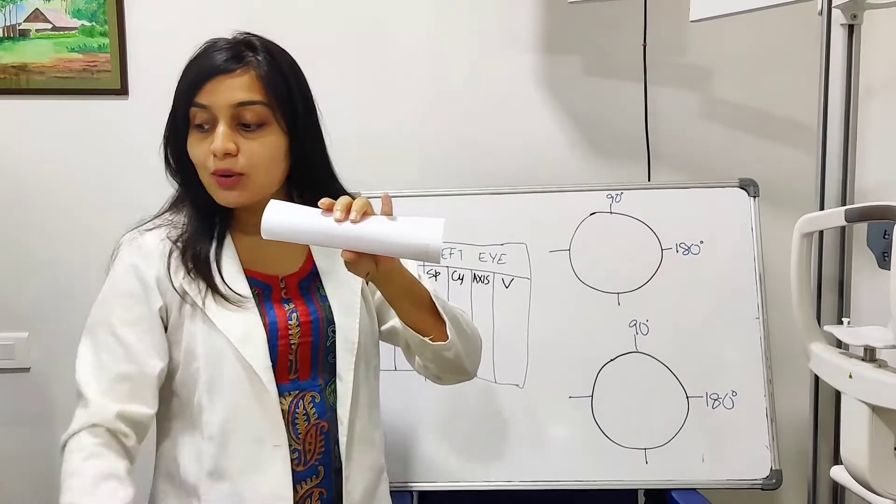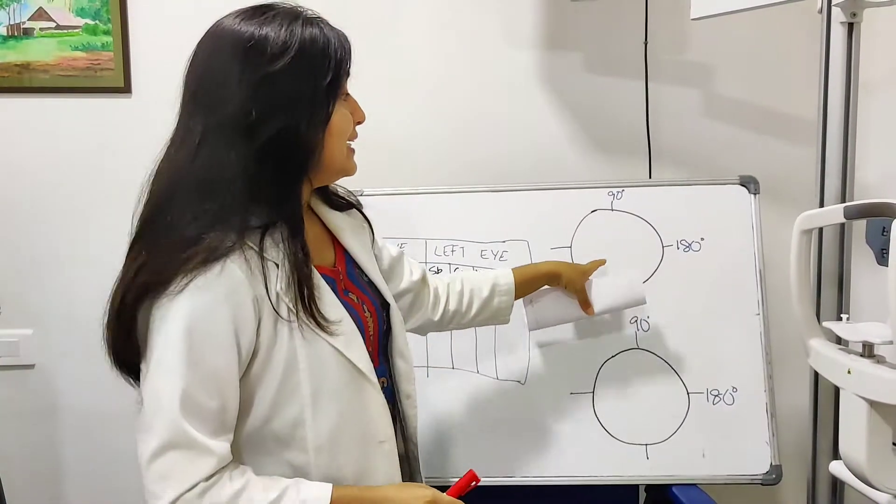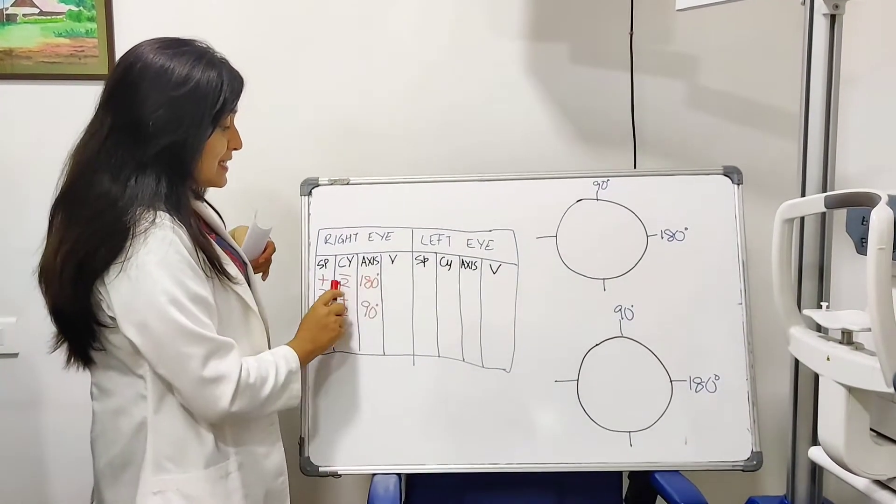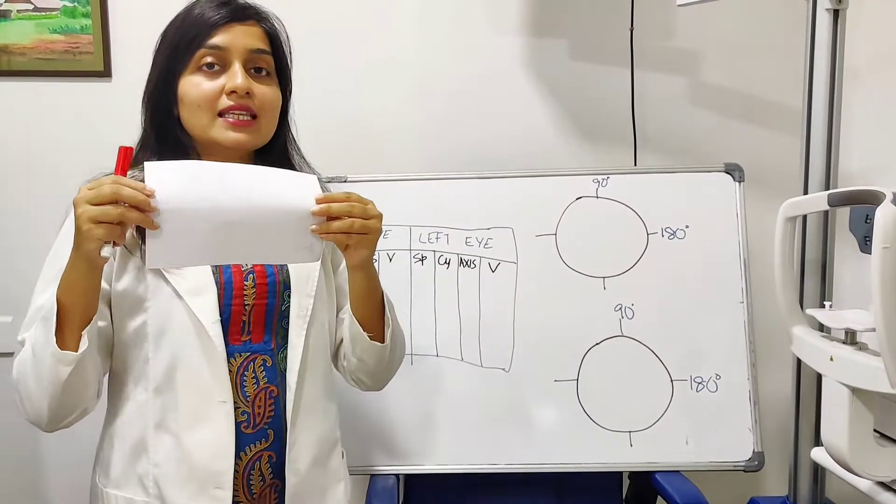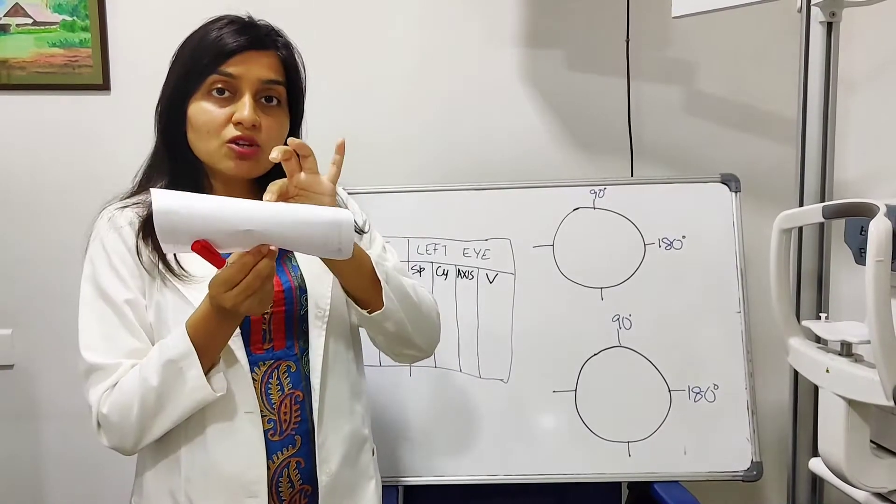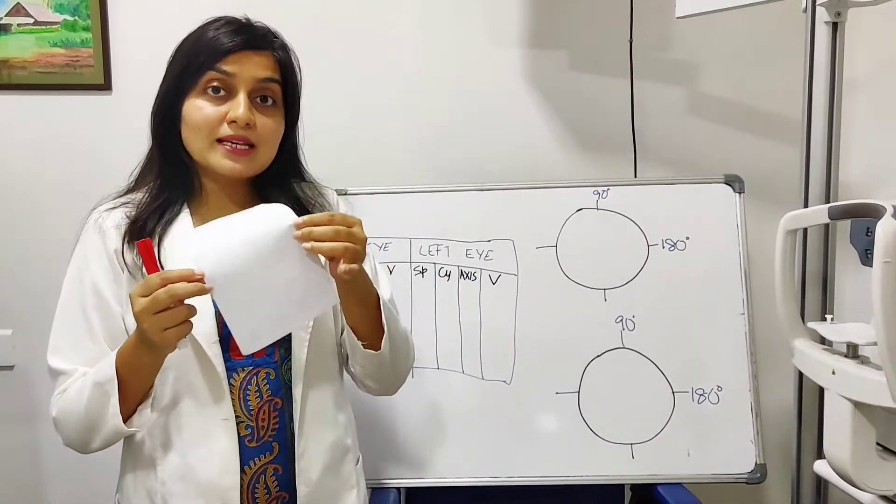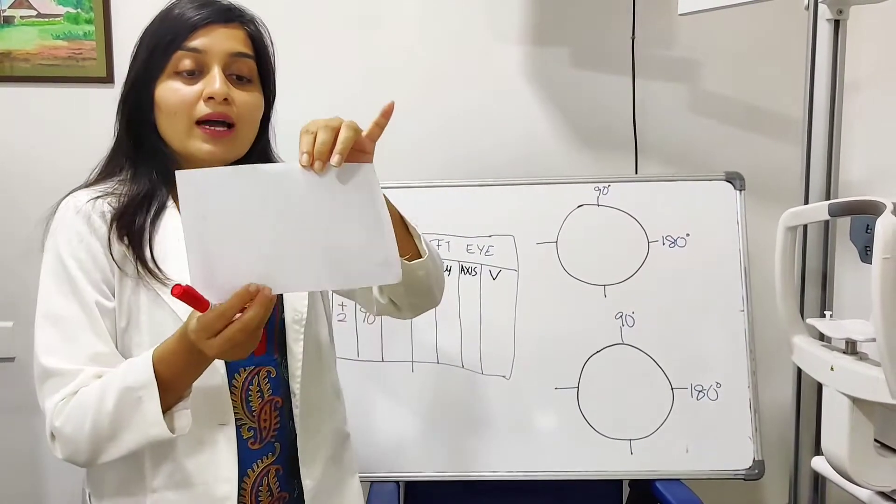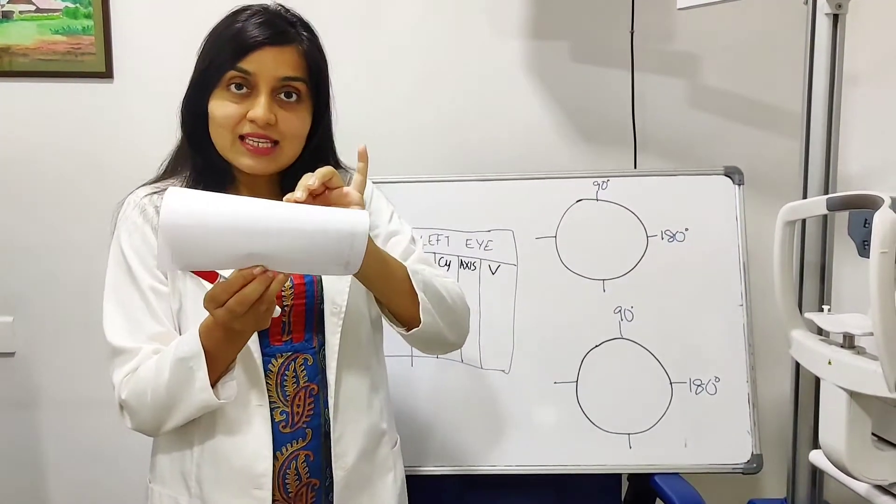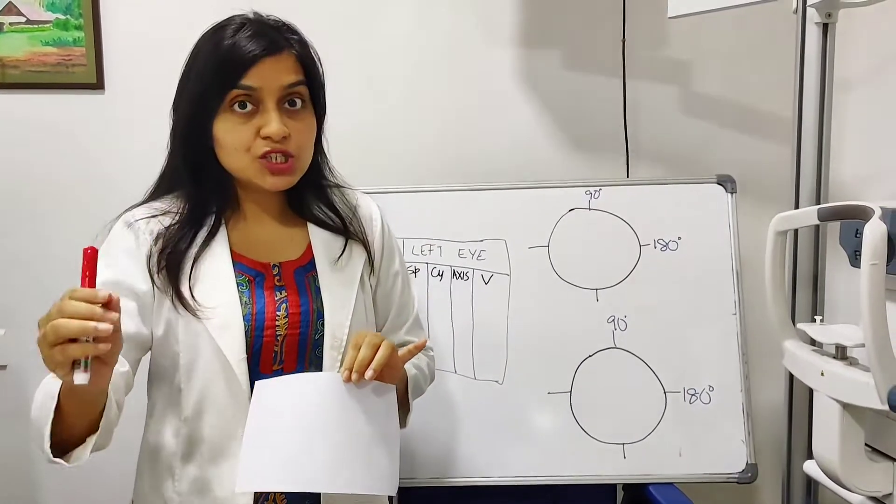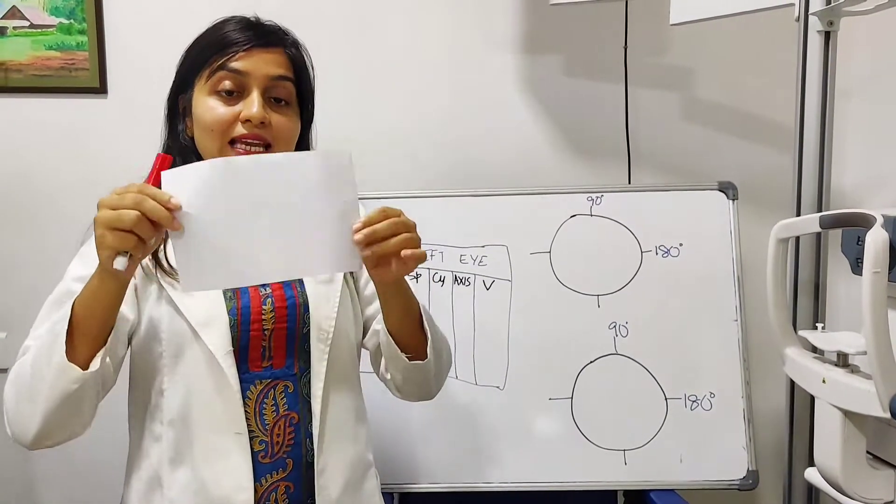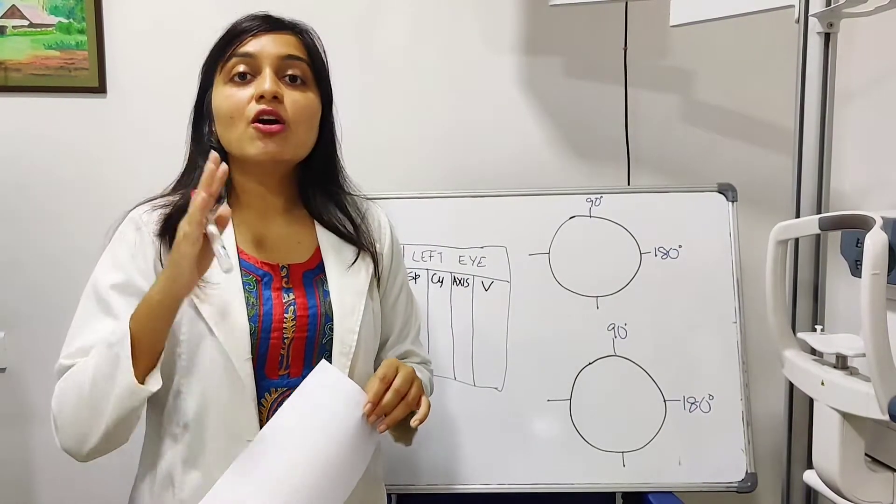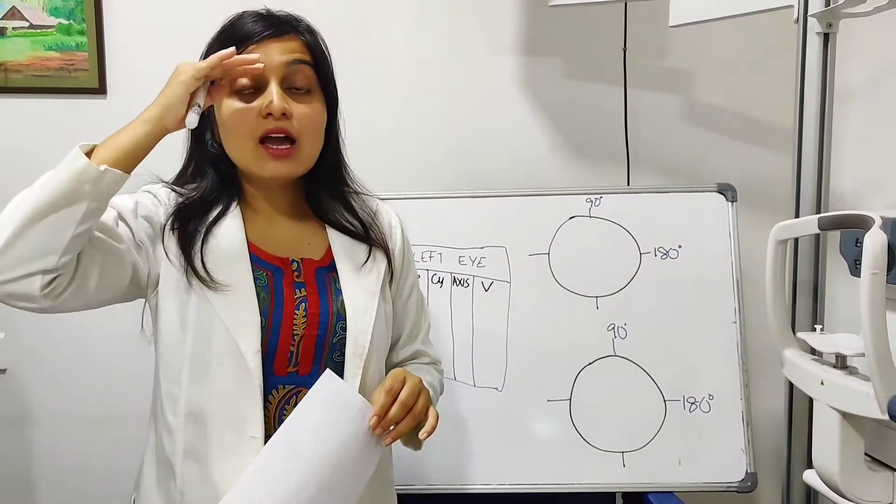And how will you show it on the cylinder? So this is your eyeball. So this is where the axis comes in. So whenever we say the cylinder, it's not just minus or plus. Don't just look at the minus or the plus. Look at the 180 and the 90 degrees. So 180 is more curved like this, which is very common in children.